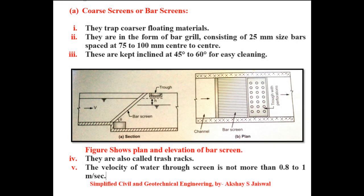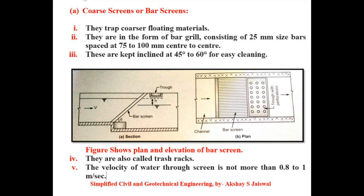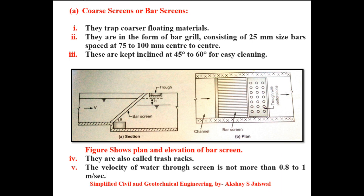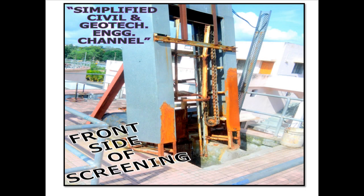Now we will discuss the coarse screen, also known as the bar screen. Point 1: They trap coarser floating materials. Point 2: They are in the form of a bar grille consisting of 25mm size bars spaced at 75–100mm centre to centre. Point 3: These are kept inclined at 45–60 degrees for easy cleaning. This figure shows the plan and elevation of a bar screen. Point 4: They are also called trash racks. Point 5: The velocity of water through the screen is not more than 0.8–1 metre per second.